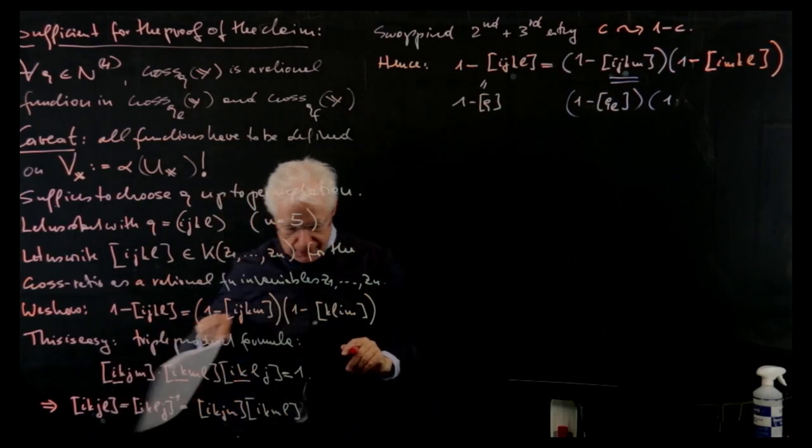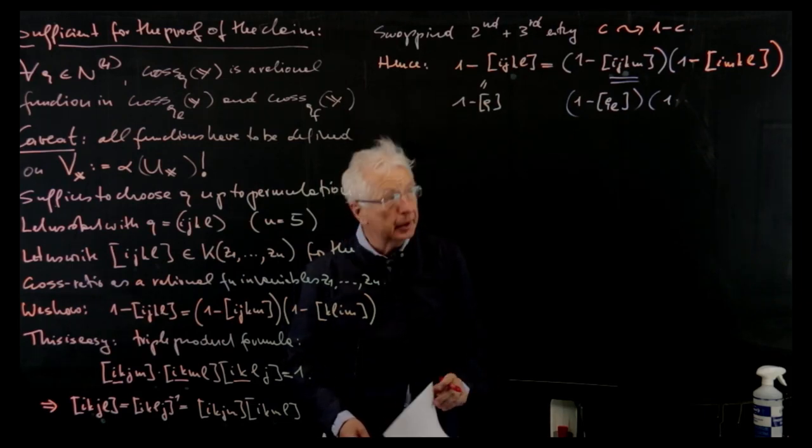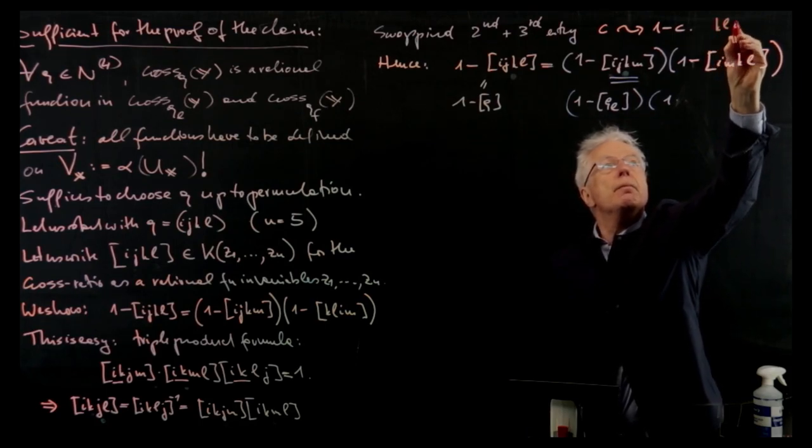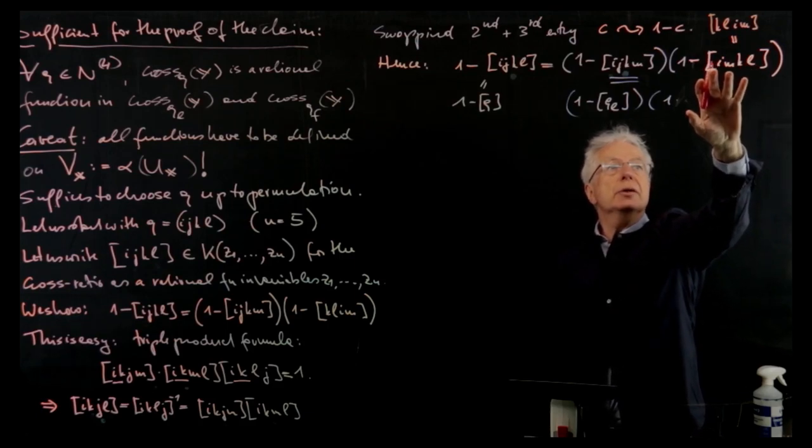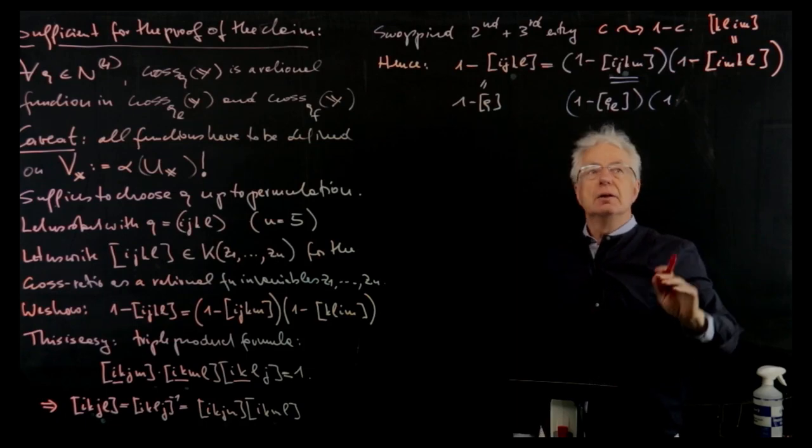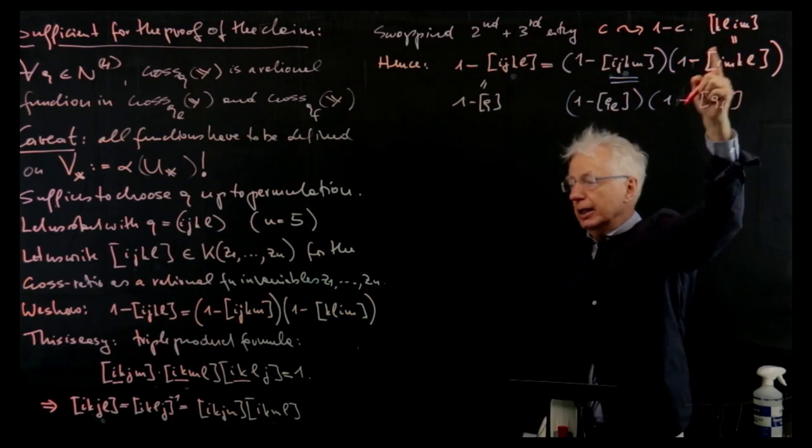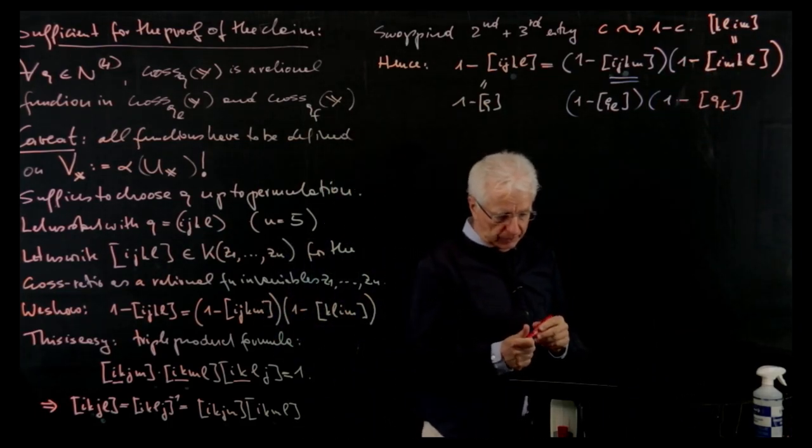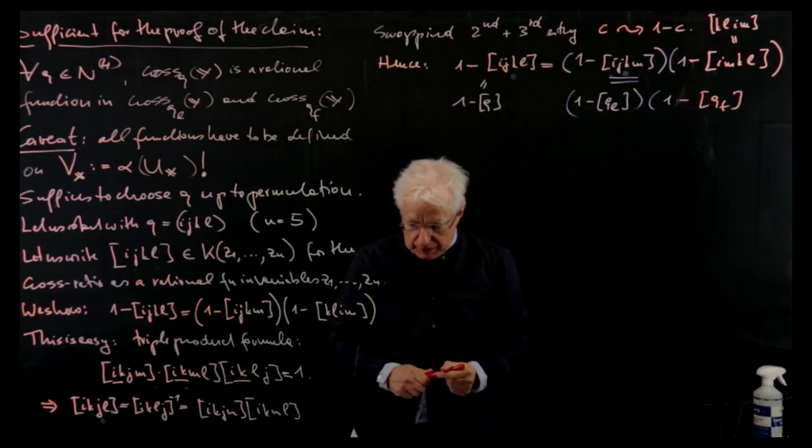That's easy to see. If you exchange the first two with the last two, you get the same. So this is 1 minus q, f. k, l, i, m was the one we had here. Thank you, that was a mistake. But I hope, I think it's correct now, but please check it again.